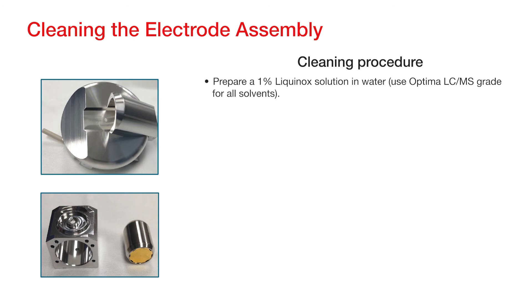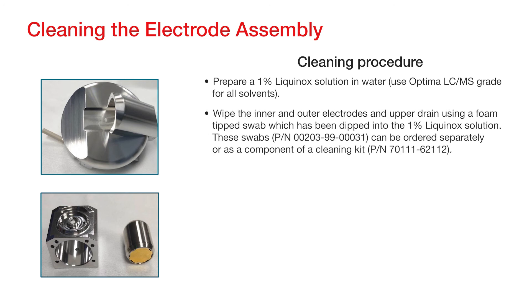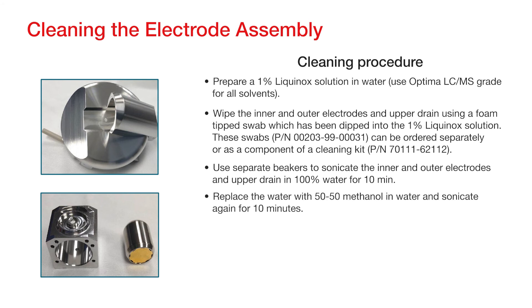Prepare a 1% Liquinox solution in water. Wipe the inner and outer electrodes and upper drain using a foam-tipped swab, which has been dipped in the 1% Liquinox solution. These swabs can be ordered separately or as a component of a cleaning kit. Use separate beakers to sonicate the inner and outer electrodes and upper drain in 100% water for 10 minutes. Replace the water with 50-50 methanol and water and sonicate again for 10 minutes.